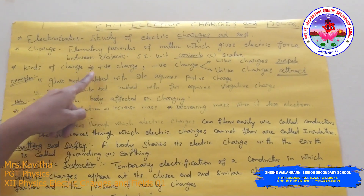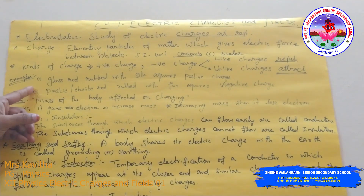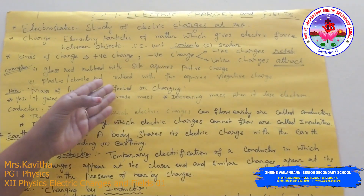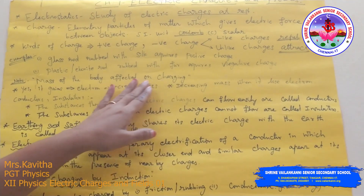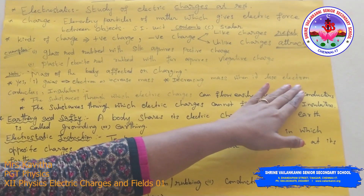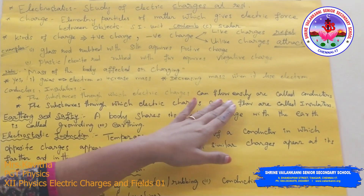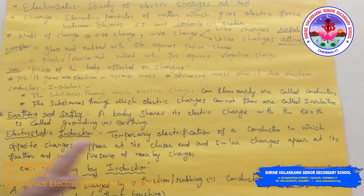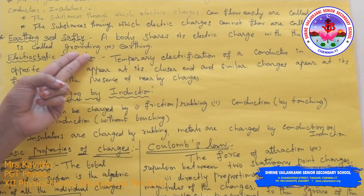Kinds of charges: positive charge and negative charge. Like charges repel, unlike charges attract. Examples: a glass rod rubbed with silk acquires positive charge; plastic or ebonite rod rubbed with fur acquires negative charge. Mass of the body is affected by charging — mass increases when it gains electrons, decreases when it loses electrons. Earthing — a body shares its electric charge with the earth — is called grounding.